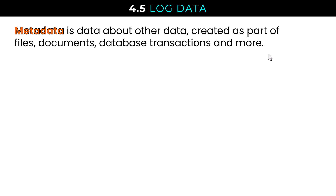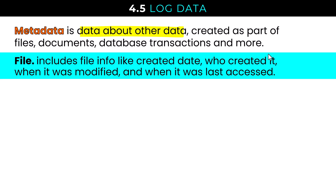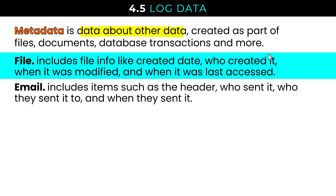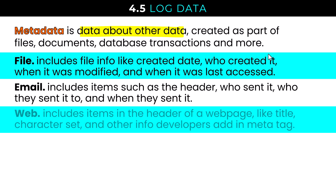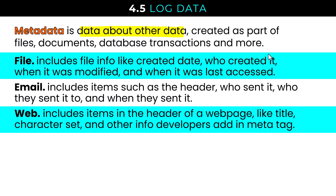Then we have metadata — data about other data, created as part of files, documents, database transactions, and quite a bit more. For files, that means file information like created date, who created it, when it was modified, and when it was last accessed. Email metadata includes items like the header, who sent it, who they sent it to, and when they sent it. On the web, that includes items in the header of a web page, like the title, the character set, and other info developers add using the meta tag.